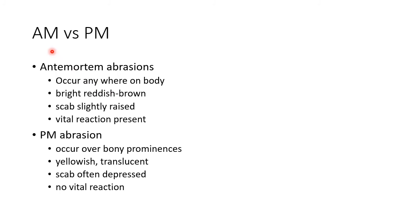Now let us see about the differences between antemortem abrasions and postmortem abrasions. Antemortem abrasions usually occur anywhere on the body, whereas postmortem abrasions usually occur over bony prominences. Antemortem abrasions are usually bright reddish-brown in color, while postmortem abrasions are usually yellowish in color and translucent. In antemortem abrasions, the scab is slightly raised, whereas in postmortem abrasions, the scab is often depressed. Vital reactions are present in antemortem abrasions but absent in postmortem abrasions.